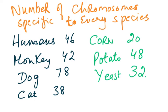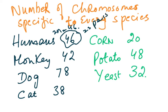First we have to understand that the number of chromosomes is specific to every species. Humans have 46 chromosomes, so the diploid number or 2n is equal to 46, which means 23 pairs — chromosomes are always found in pairs. In monkeys it's 42 (21 pairs), in dogs it's 78, in cats it's 38, in corn it's 20, in potato plants it's 48, and in yeast, a unicellular organism, it's 32.